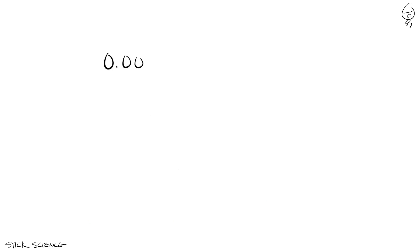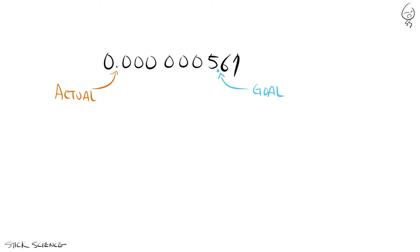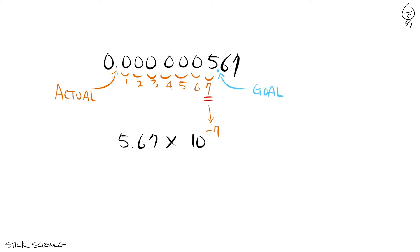The shortcut is also the same. Visualize where you want the decimal point to end up, then count the number of places you need to move it: 1, 2, 3, 4, 5, 6, 7. That's your exponent. But remember, it's a negative exponent this time. Rewrite, and you're done.